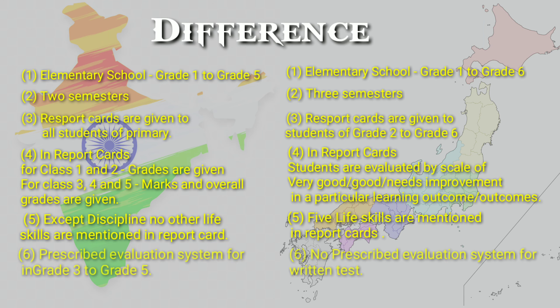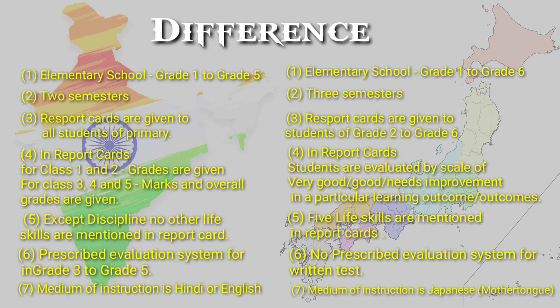The last difference: there is a prescribed evaluation system for written tests in Grade 3 to Grade 5 in Kendra Vidyalai, whereas there is no prescribed evaluation system for written tests in Kogane Elementary School. The medium of instruction in Kendra Vidyalai is Hindi or English — and Hindi may not be the mother tongue of all students. Whereas in Kogane Elementary School, the medium of instruction is Japanese.